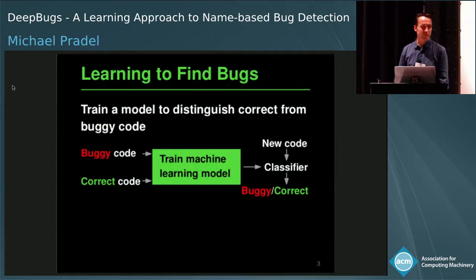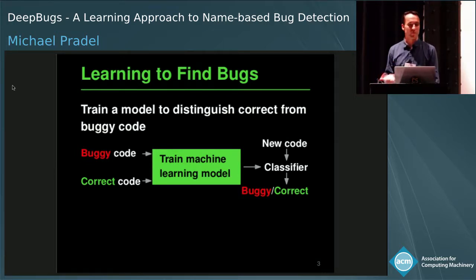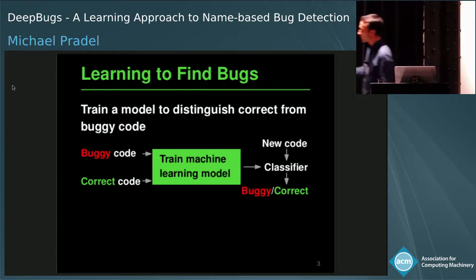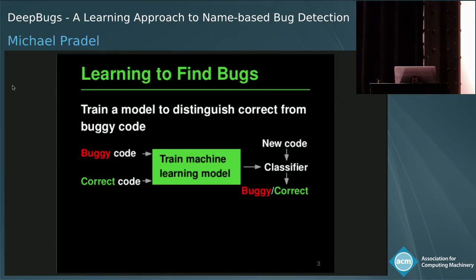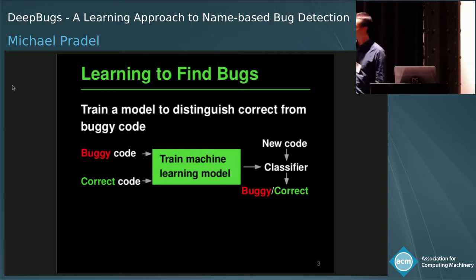So what can we do about this? The basic idea of our work is, instead of manually creating a program analysis to find bugs, to learn how to find bugs by training a model that distinguishes correct code from incorrect code. At a high level: we take a set of buggy code examples and a set of correct code examples, feed these into a machine learning model, which gives us a classifier that can tell us whether new code is buggy or correct — always with respect to one particular bug pattern.